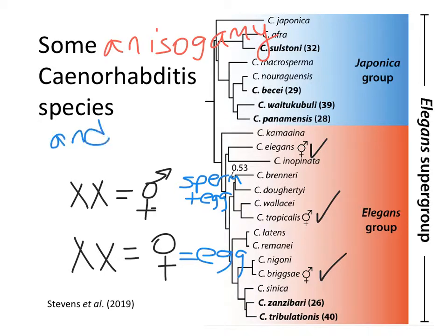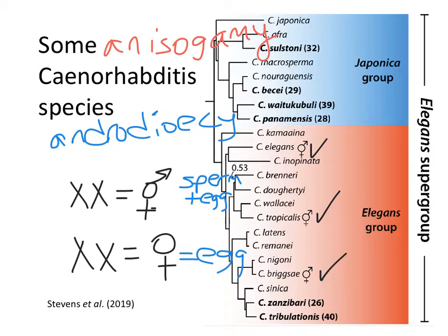Getting back to Caenorhabditis specifically — these hermaphrodites are sequential hermaphrodites, not simultaneous. They first produce sperm, then produce eggs. That process is called androdioecious. 'Dioecious' organisms produce two different types of gametes. 'Andro' means male gamete — so sperm come first, and then the organism switches to making oocytes. The opposite would be gynodioecious — if oocytes are made first and then sperm later. So Caenorhabditis hermaphrodites are androdioecious: sperm first, then oocytes.